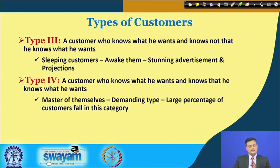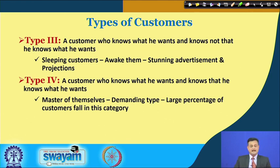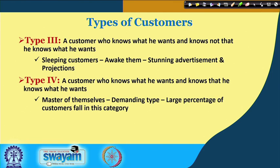Type 4 is a customer who knows what he wants and knows that he knows what he wants — there is full awareness on both fronts. These are the master-of-themselves, demanding type, and a large percentage of customers fall in this category. They are aware of their need and aware that they are aware of it.